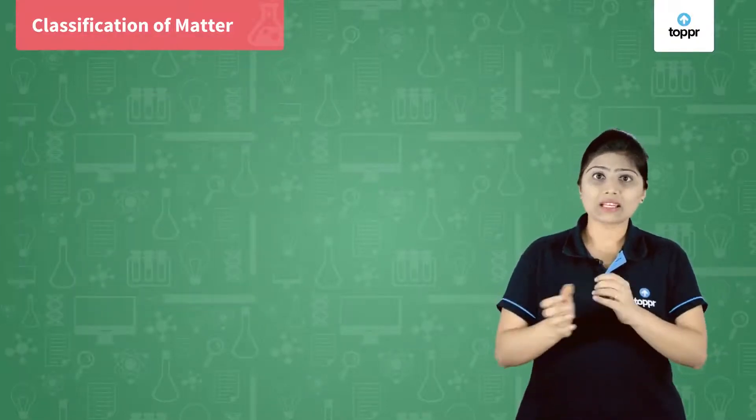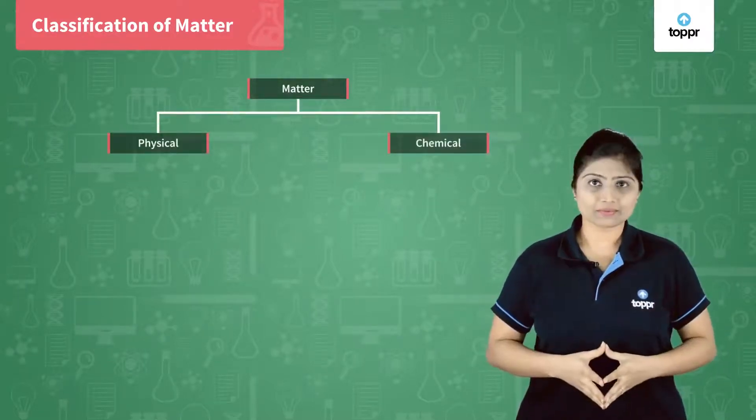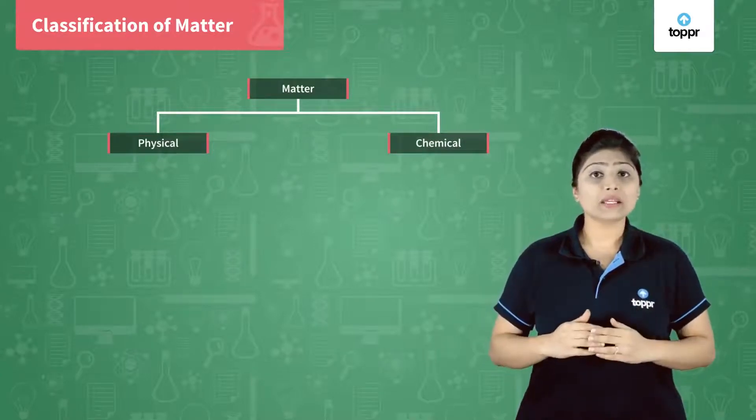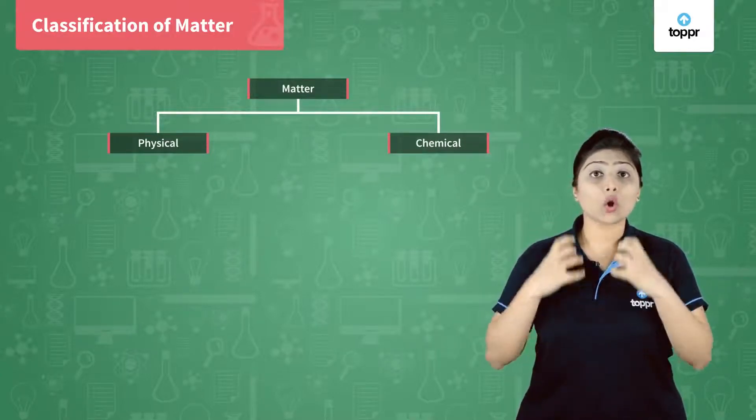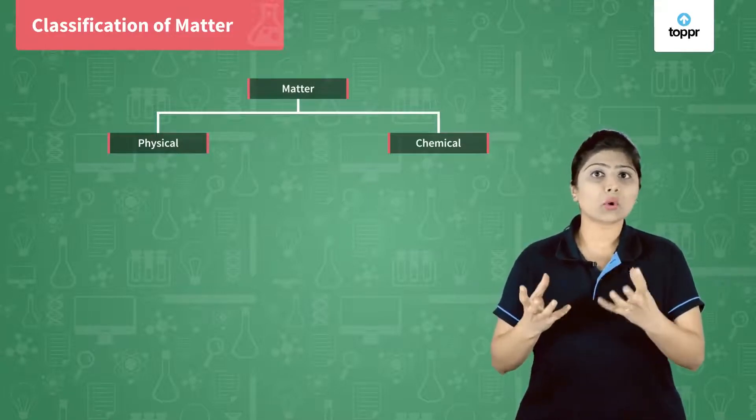So they thought of classifying matter into its physical and chemical properties. Physical properties of matter are those which you can observe or which you can measure, like the melting point, boiling point,